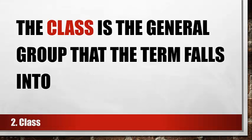Once you've decided on the term you want to define, you need to decide which class it falls into. The class is the general term that the term falls into. In the case of a German Shepherd, it could have many different classes — just choose one. It could be dog, sporting dog, pet, animal, or mammal. You have to choose the one that works best with your definition.